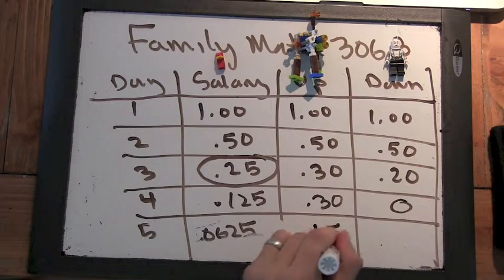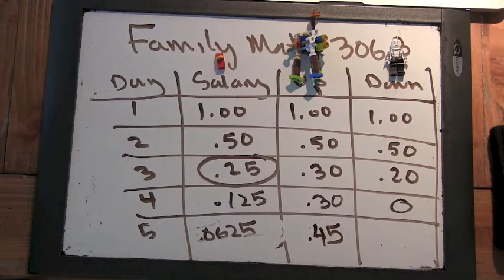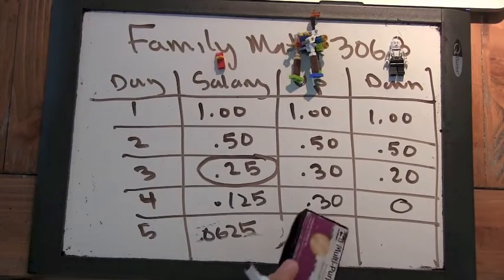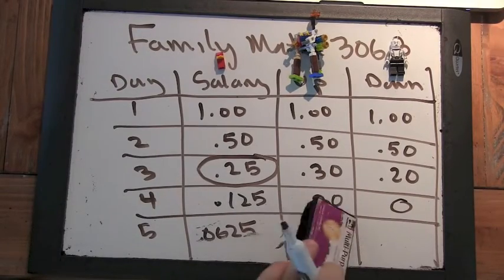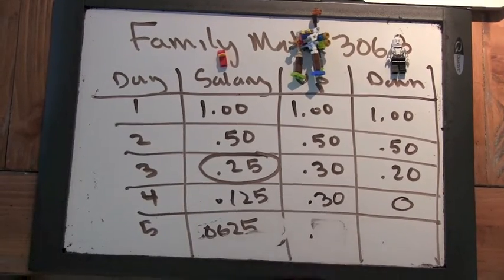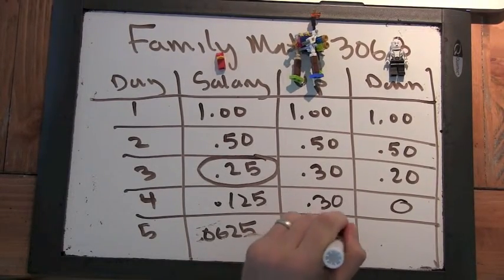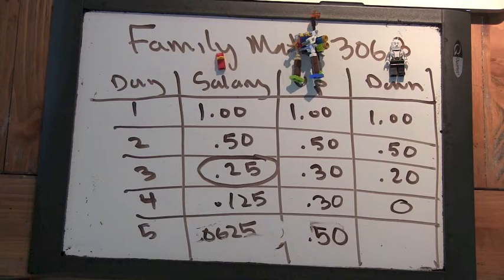.45. Rounded up is .50. Rounded up is .50. So it looks like the salary is actually in the least.